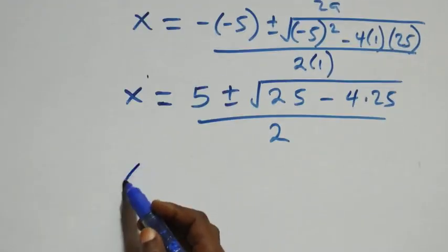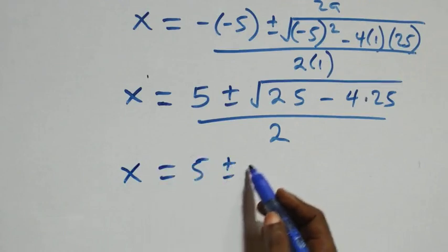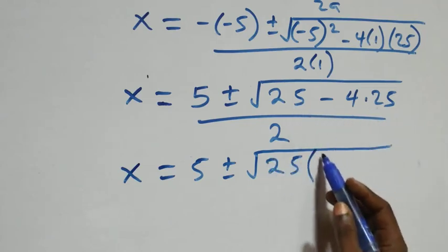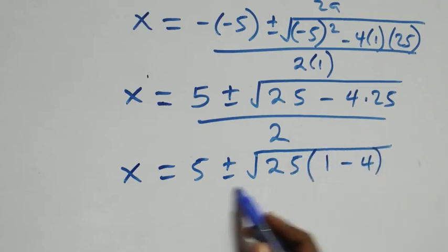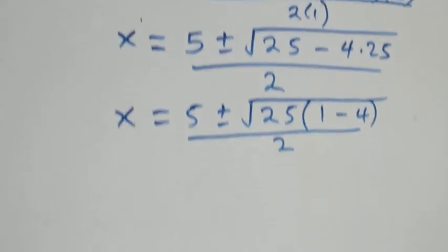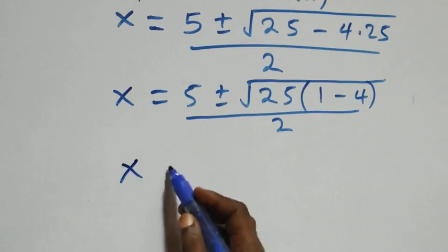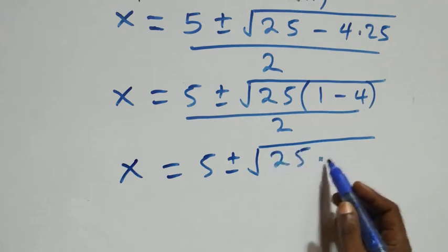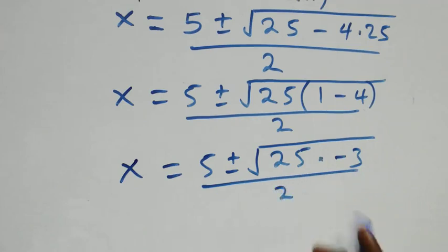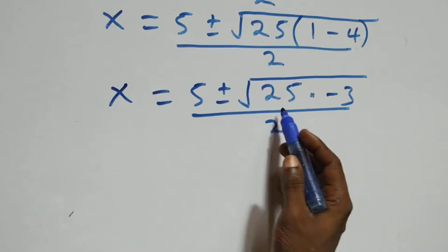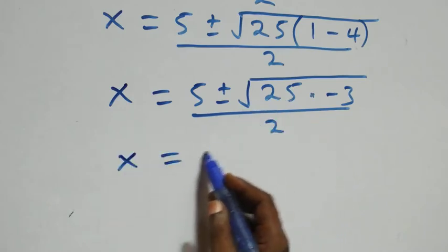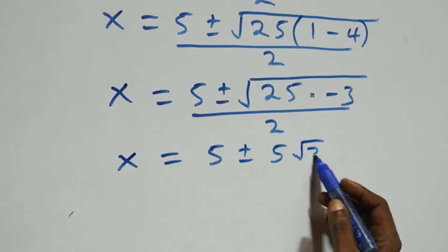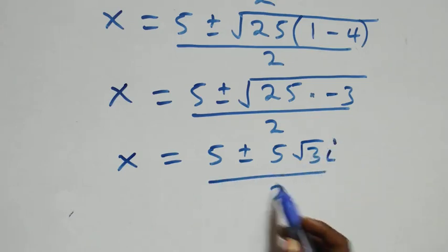This gives us x = (5 ± √(25 · (1 - 4))) / 2, which simplifies to x = (5 ± 5√(-3)) / 2, the same as x = (5 ± 5i√3) / 2. So here we have two complex solutions.